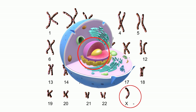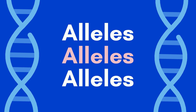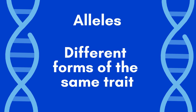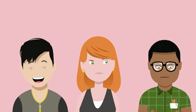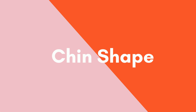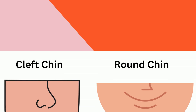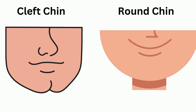In a more narrow sense, the term genotype can be used to refer to the alleles or different forms of a gene that are carried by an organism. So genotype can be the pair of alleles that code for a trait. Remember, alleles are different forms of the same trait, like different colors of hair, or a round chin compared to a cleft chin.